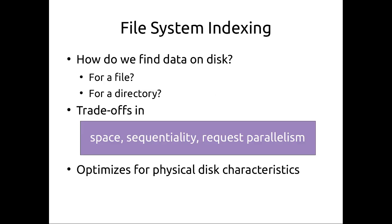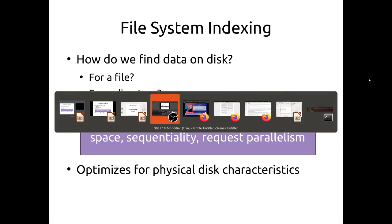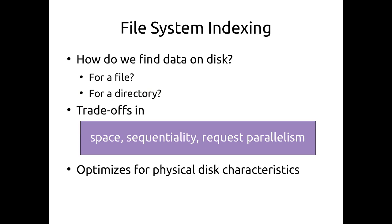To summarize: we talked about file system indexing today. The big question was how we find data on disk and organize data for directories and files. This involves trade-offs in space, sequentiality of allocations (mapping to rotational access latency), and whether we can achieve request parallelism to the disk. We want to form index structures that optimize for physical disk characteristics. Next lecture we'll talk about similar optimizations for both magnetic disks and solid-state disks.